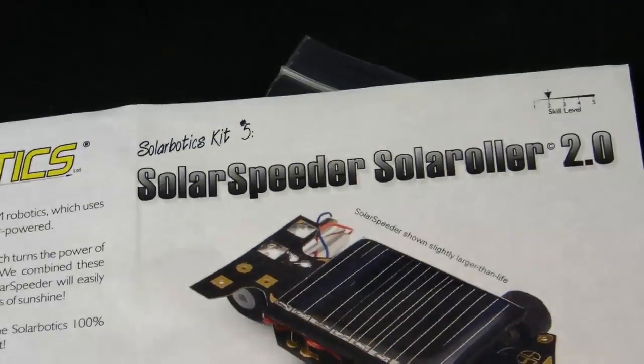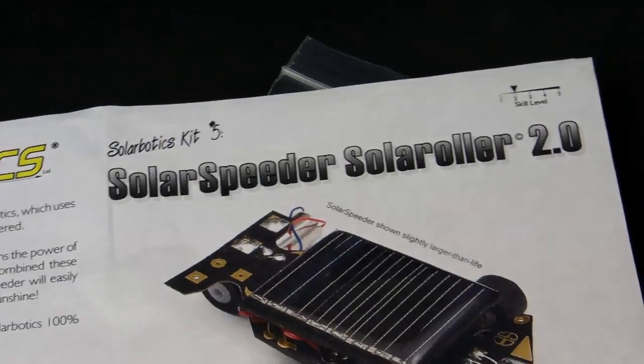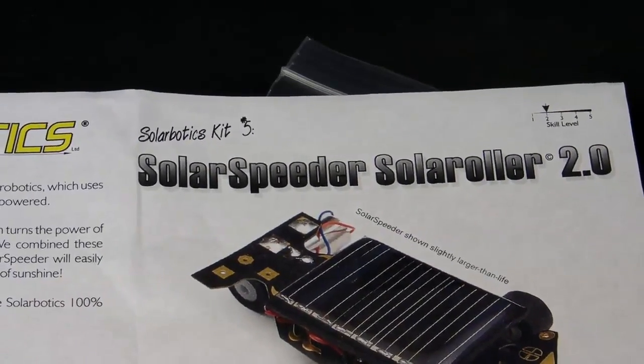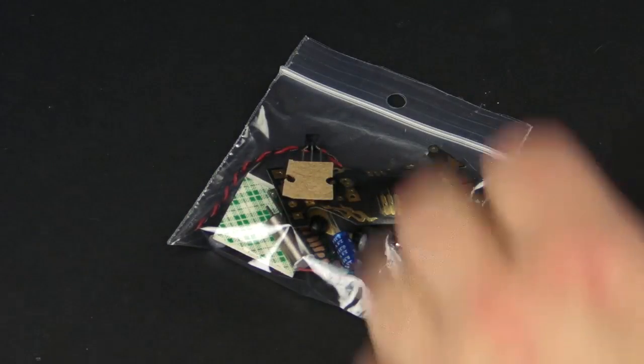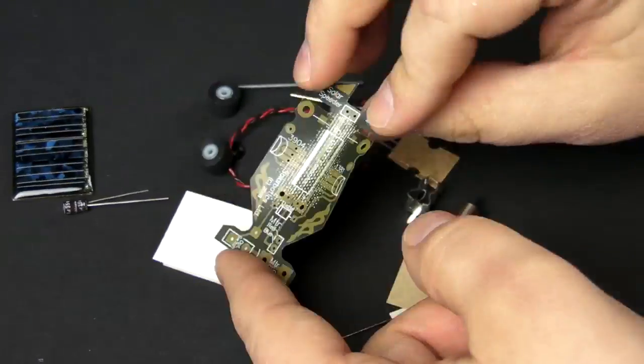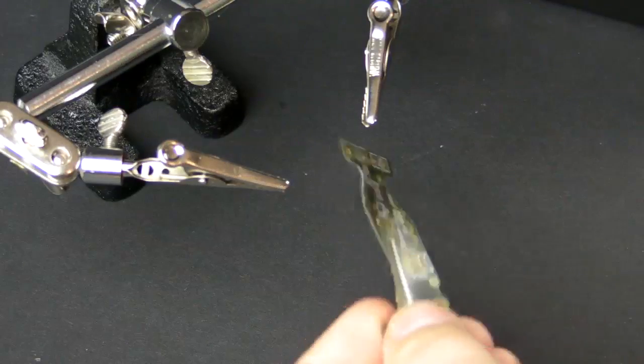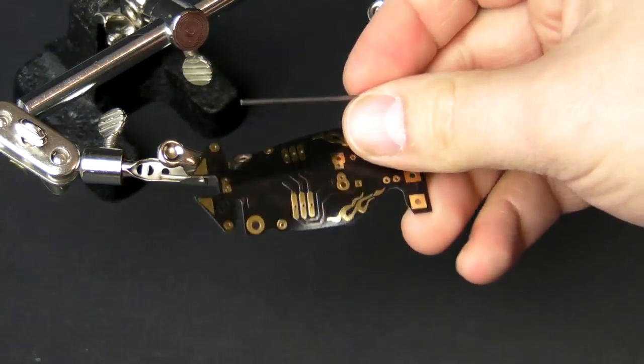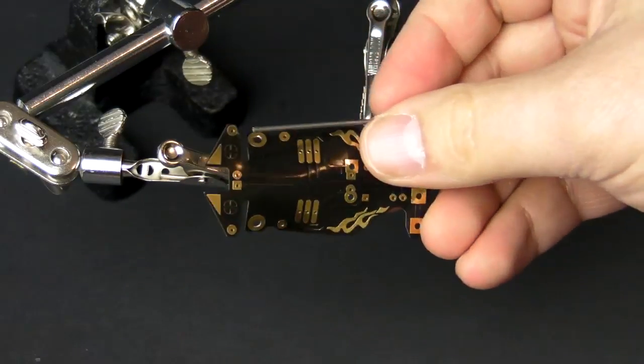Today we're going to be making the Solar Speeder 2.0. It's available in the Maker Shed at makershed.com. Like my previous videos, I'm not going to show you every single step involved in making the kit. I'm going to fast forward through a lot of the steps, but I'll highlight some of the important things. So let's get started.